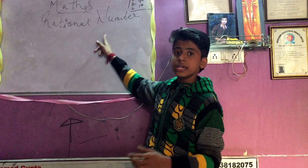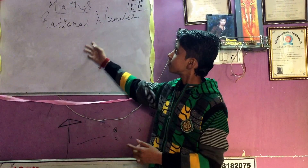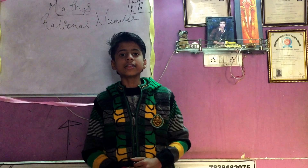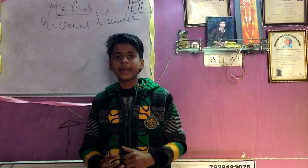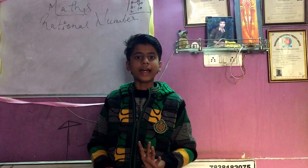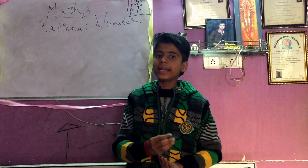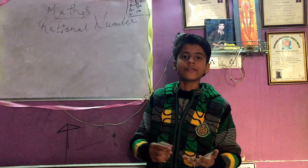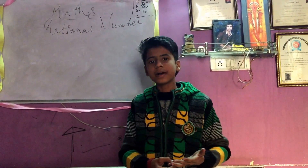Today I will teach you rational numbers. Rational numbers are those numbers which can be added, subtracted, multiplied, and divided by any digit — whether that is a fraction, decimal, or any type of digit.